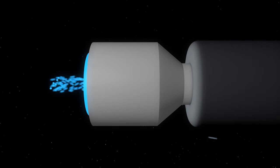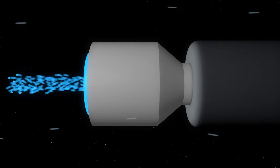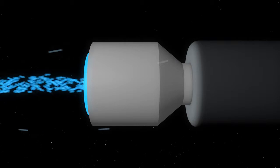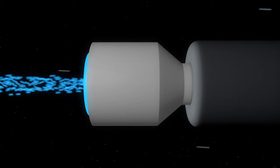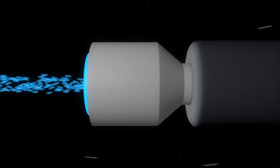Ion thrusters produce relatively small levels of thrust but can do so over long distances. NASA's newest ion thruster can produce a thrusting force for 43,000 hours which allows it to have a fuel efficiency of up to 12 times greater than conventional chemical thrusters.